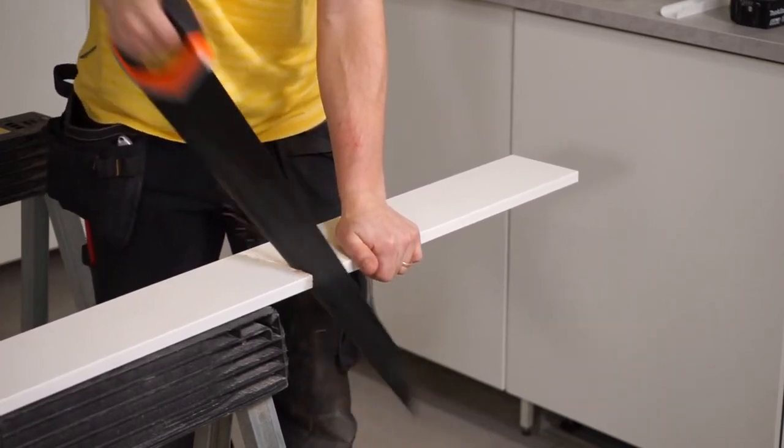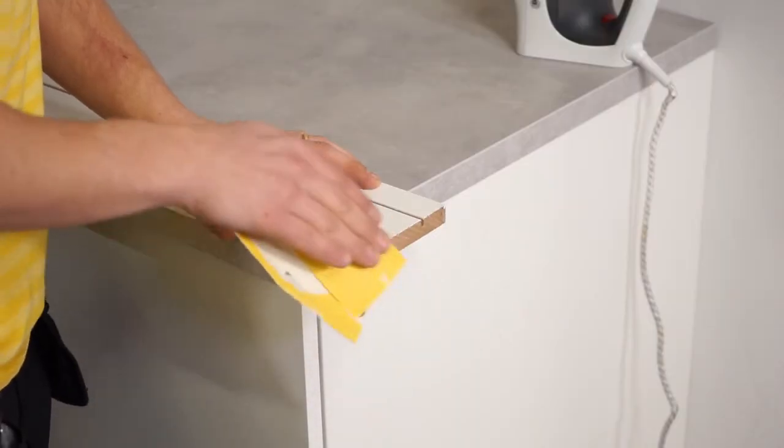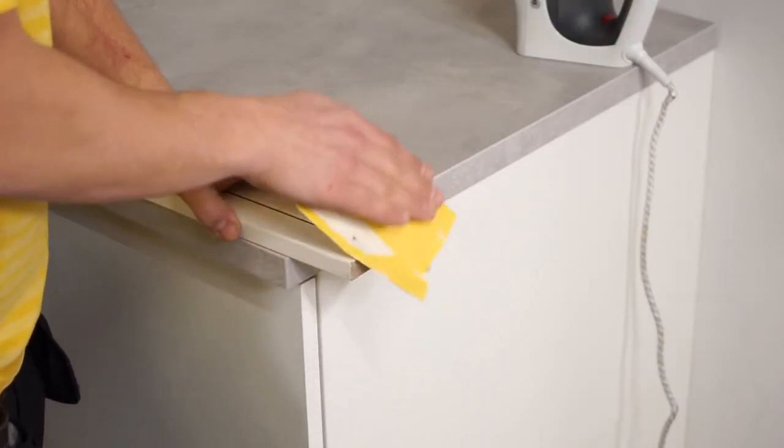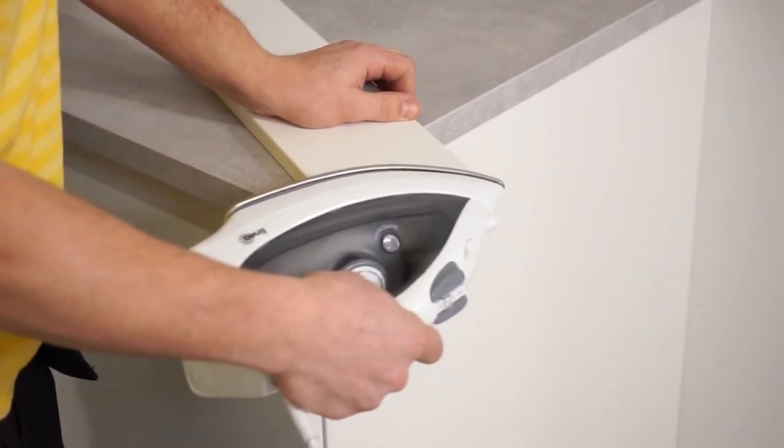If you have a corner always start with the side plinth. The open edges need to be sanded and sealed with the edge band that comes with the plinth.